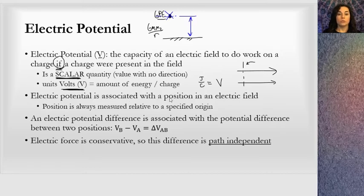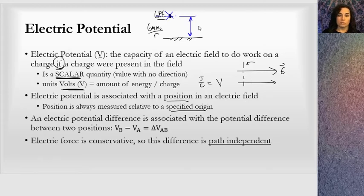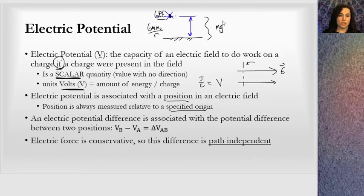Electric potential is associated with a position in an electric field — just a position somewhere in an electric field where we associate a potential. Position is always measured relative to a specified origin. Just like gravitation, we have to specify a zero, especially with gravitational potential energy near the surface of the earth where the value is mgh — we have to specify where that H is being measured from.